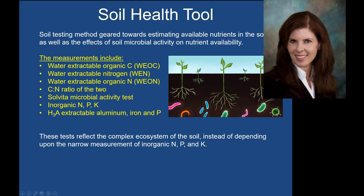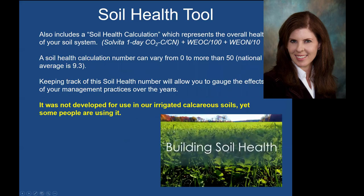These tests are supposed to reflect the complex ecosystem of the soil instead of just depending on what we would typically measure preseason, which would be your inorganic N, P, and K. This test also includes a soil health calculation, which is supposed to represent the overall health of your soil system, looking at microbial activity and some of the organic compounds in the soil. These soil health scores can vary from 0 to 50, and the national average is about 9.3.